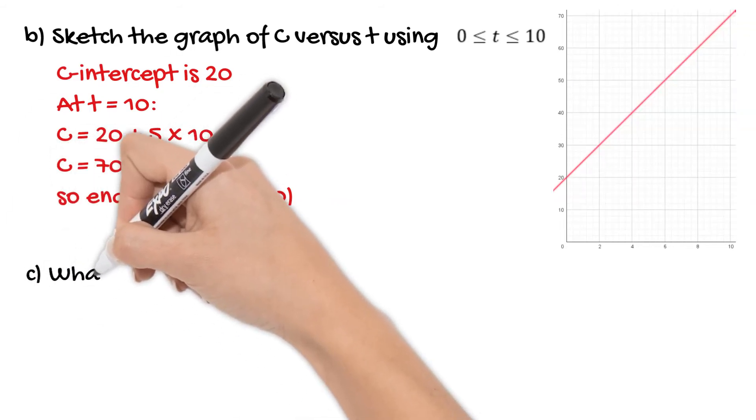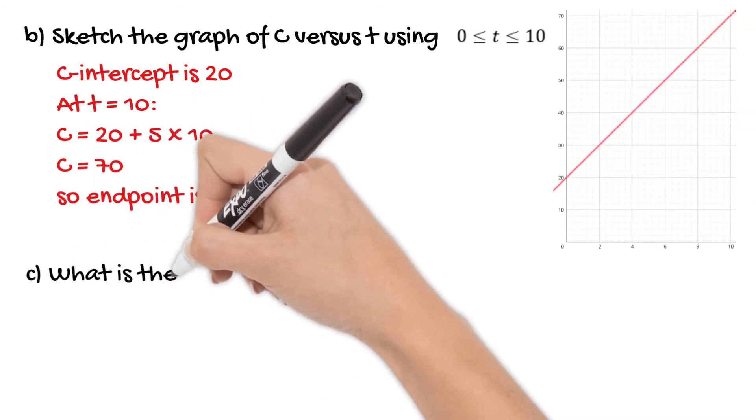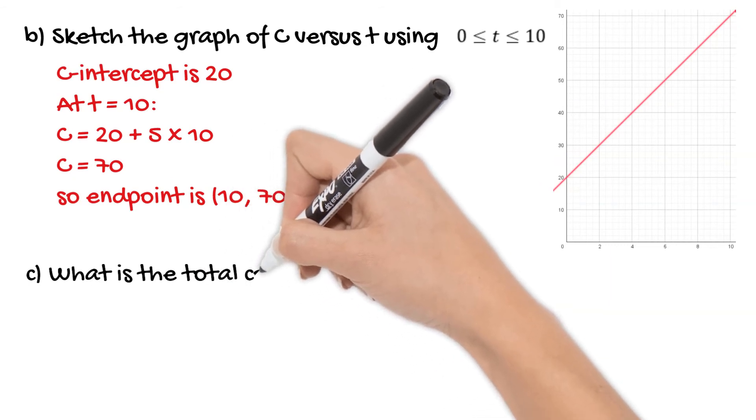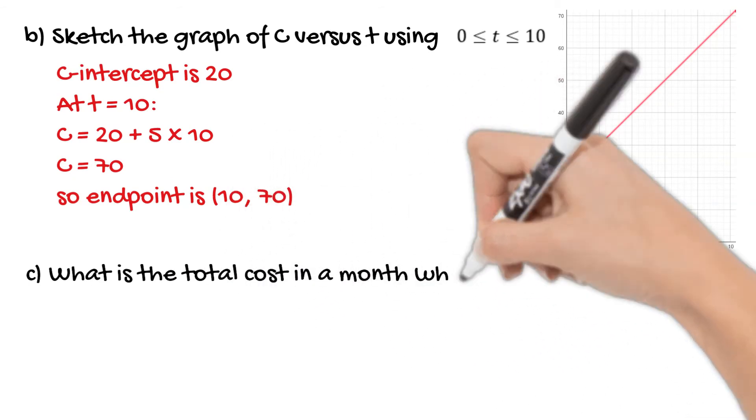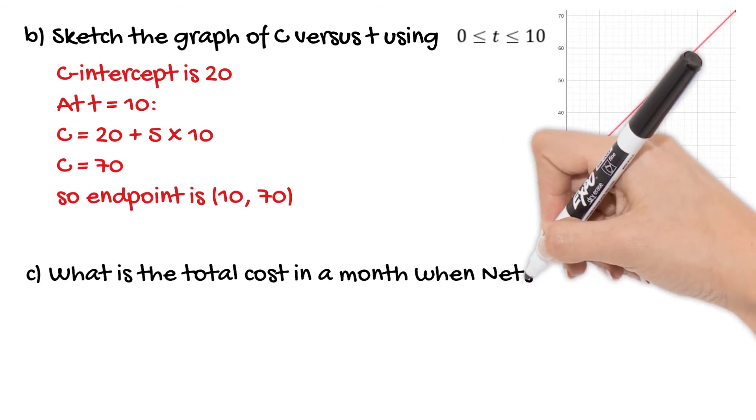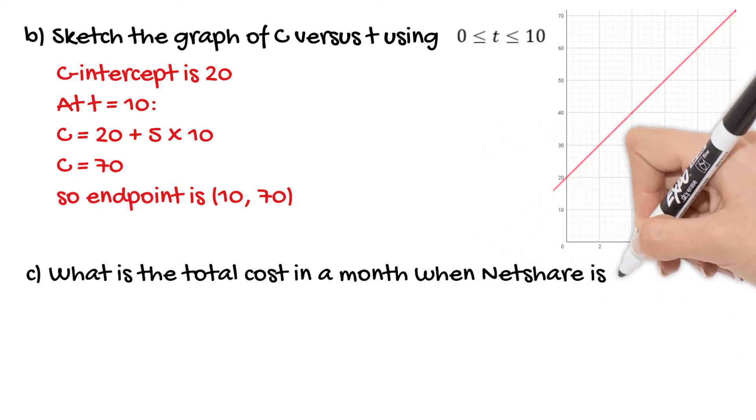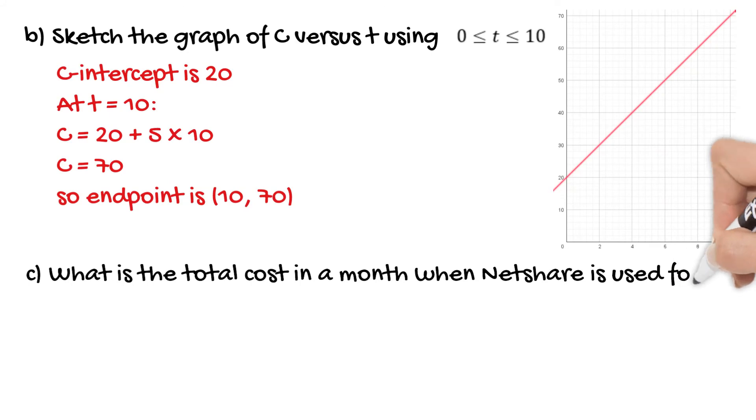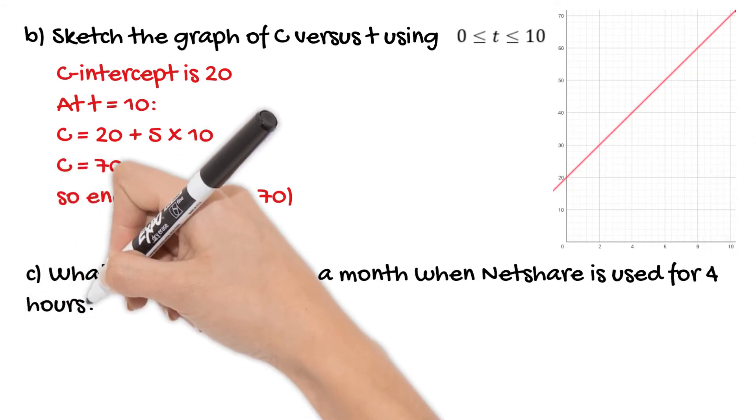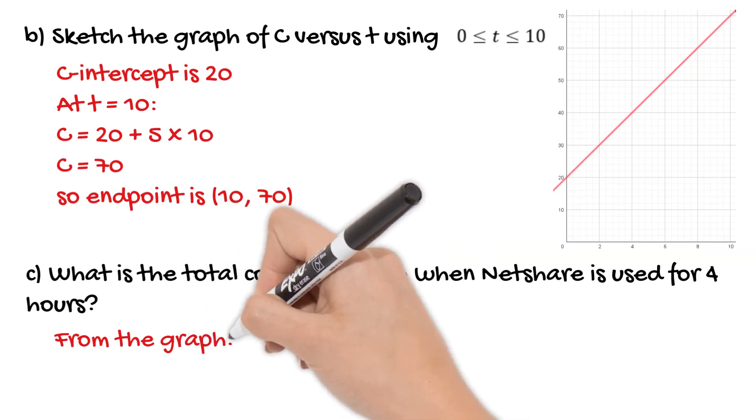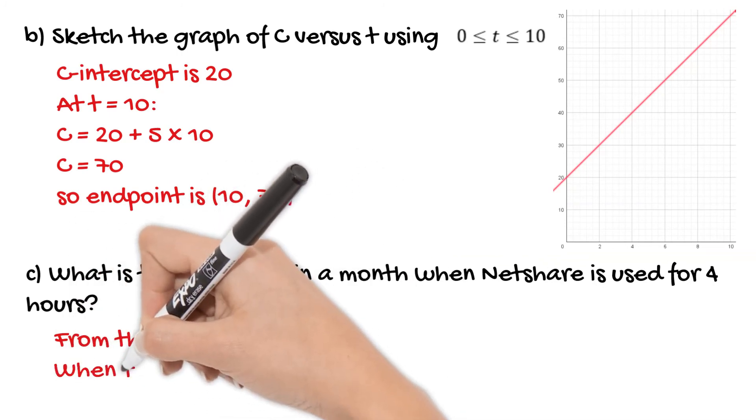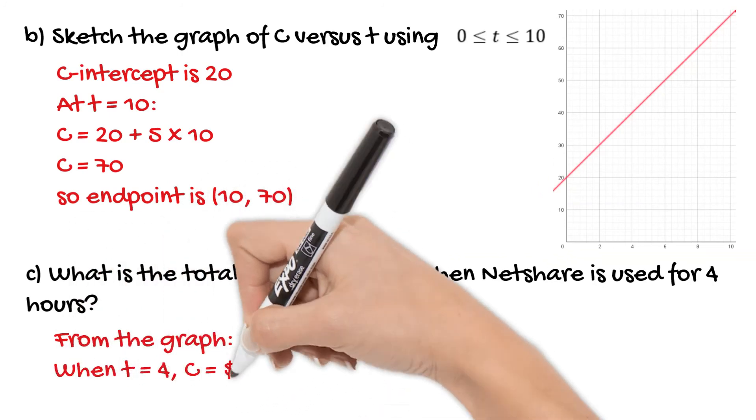So then our next problem asks: what's the total cost in a month when NetShare is used for 4 hours? We can either use the graph or the rule to answer this problem, but having a look at the graph, it's really straightforward. When T = 4, C = 40. So you can even just say, from the graph, the cost is going to be $40.